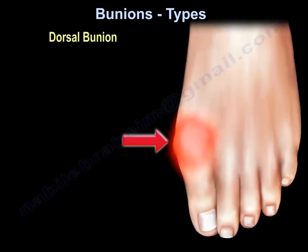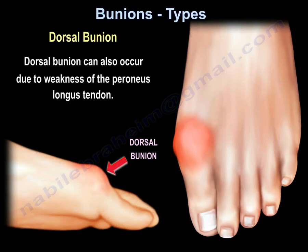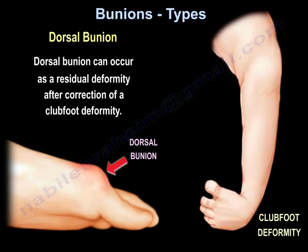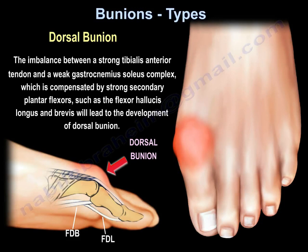Dorsal bunion occurs due to a dorsiflexed first metatarsal and overactivity of the tibialis anterior muscle. The tibialis anterior muscle is an antagonistic muscle to the peroneus longus muscle. Dorsal bunion can also occur due to weakness of the peroneus longus tendon. Dorsal bunion can occur as a residual deformity after correction of a clubfoot deformity. The imbalance between a strong tibialis anterior tendon and a weak gastrocnemius-soleus complex, compensated by strong secondary plantar flexors such as the flexor hallucis longus and brevis, will lead to the development of dorsal bunion.